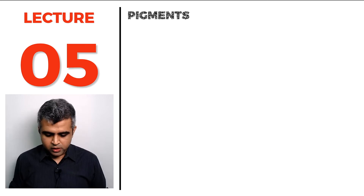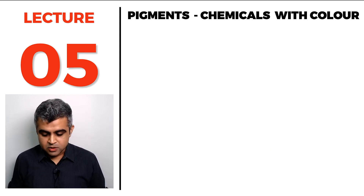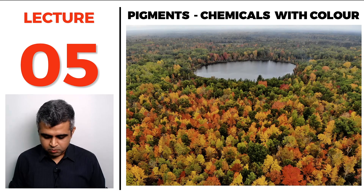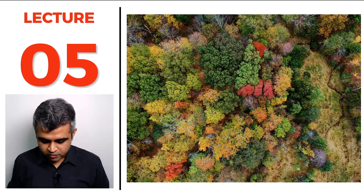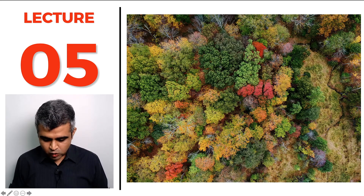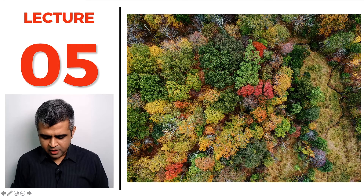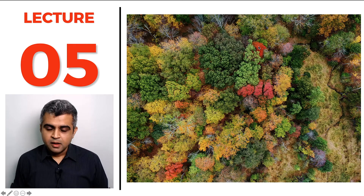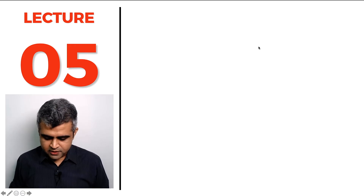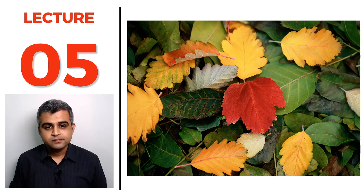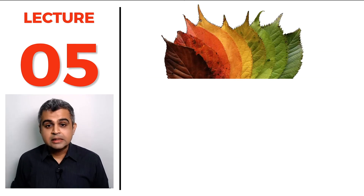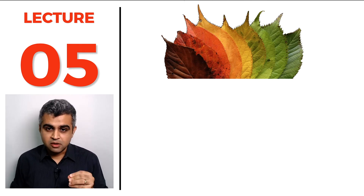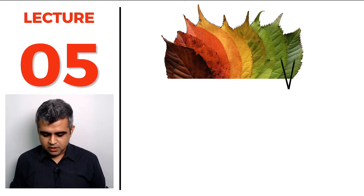We then spoke about pigments — chemicals with color. Looking at a forest, leaves can be dark green, light green, yellowish, reddish, or orangish. The green chemical giving green color to leaves is called chlorophyll.